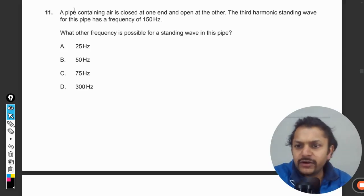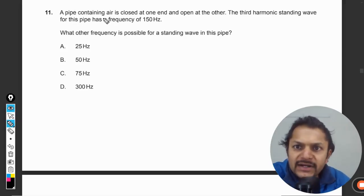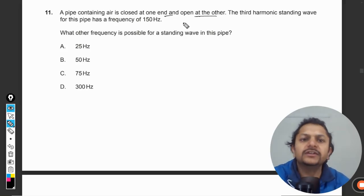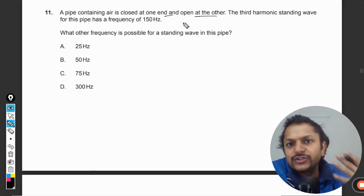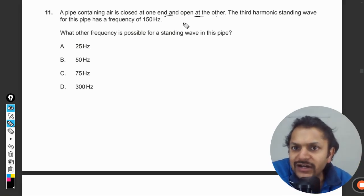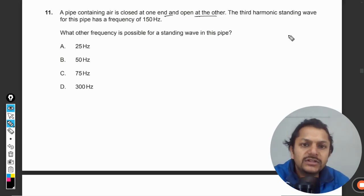Let us see what is there in this question. A pipe containing air is closed at one end and open at the other. The third harmonic standing wave for this pipe has a frequency of 150 hertz. What other frequency is possible for the standing wave in this pipe? So we have to see now clearly.